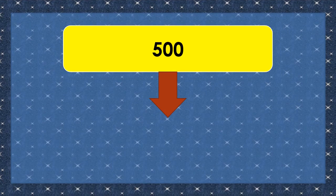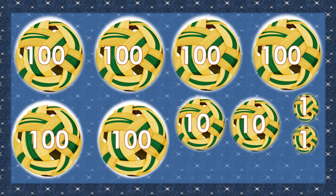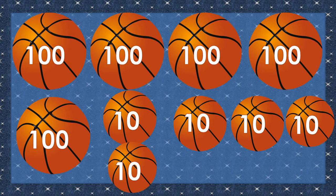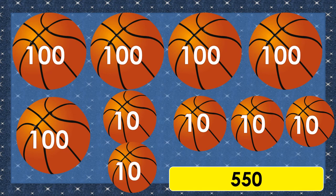This time, let's make the number bigger, from 500 up to 1000. How many cherries do we have in all? We have 6 hundreds, 2 tens, and 2 ones. There are 622 cherries in all. How about these balls? We have 5 hundreds and 5 tens. We have 550.